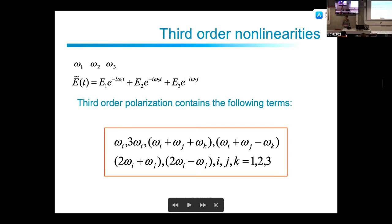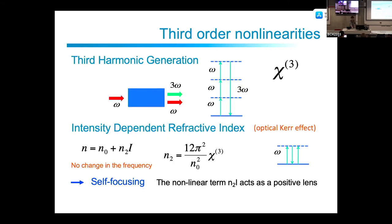For third-order processes, there are many more terms because you can mix three frequencies: the incoming frequency, third harmonic generation at 3*omega, sum and difference frequency combinations, the same frequency absorbed twice with a third photon, and two-omega minus another frequency.